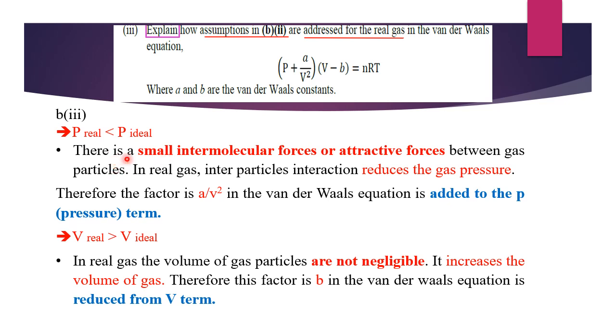In real gas, there is a small intermolecular force or attractive force between gas particles. As a result, the pressure exerted by a real gas is smaller than expected from ideal gas, especially at low temperature. In real gas, interparticle interaction or intermolecular forces reduce the gas pressure. Therefore, the factor A over V squared in the Van der Waals equation is added to correct the pressure term.